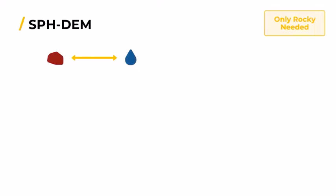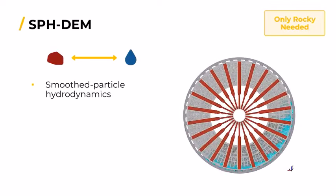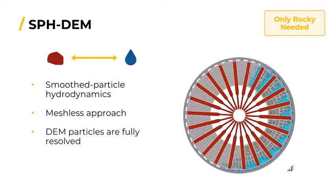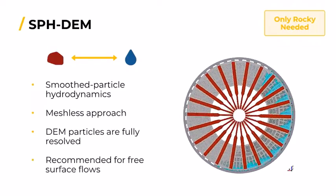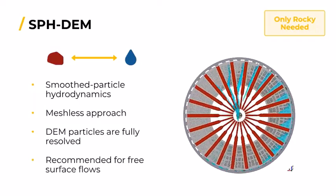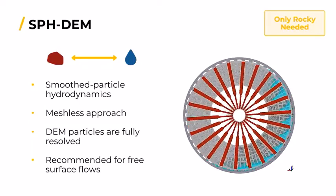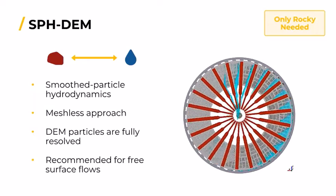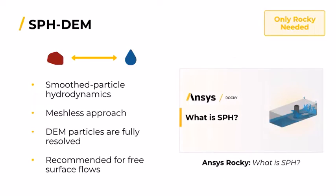Back to methods that only Rocky is needed, we have the SPH method — Smooth Particle Hydrodynamics. This is a Lagrangian method in which there's a two-way interaction between particles and fluids. Apart from being recommended for free surface flows, since this approach is meshless, it is a good alternative when complex or moving parts are present. This method does not require any external solver. For more information and example applications, watch our ANSYS Rocky video: What is SPH?